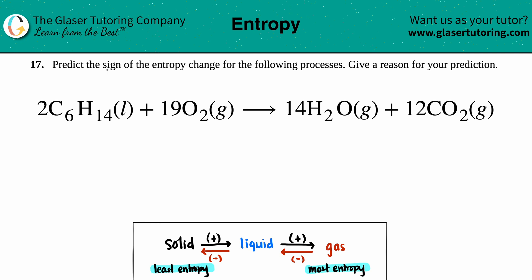Number 17: predict the sign of the entropy change for the following processes and give a reason for your prediction. Okay, so as far as the reasoning, I'm just going to talk it through. You could write down whatever you need to write down, either on a piece of paper or on your laptop.